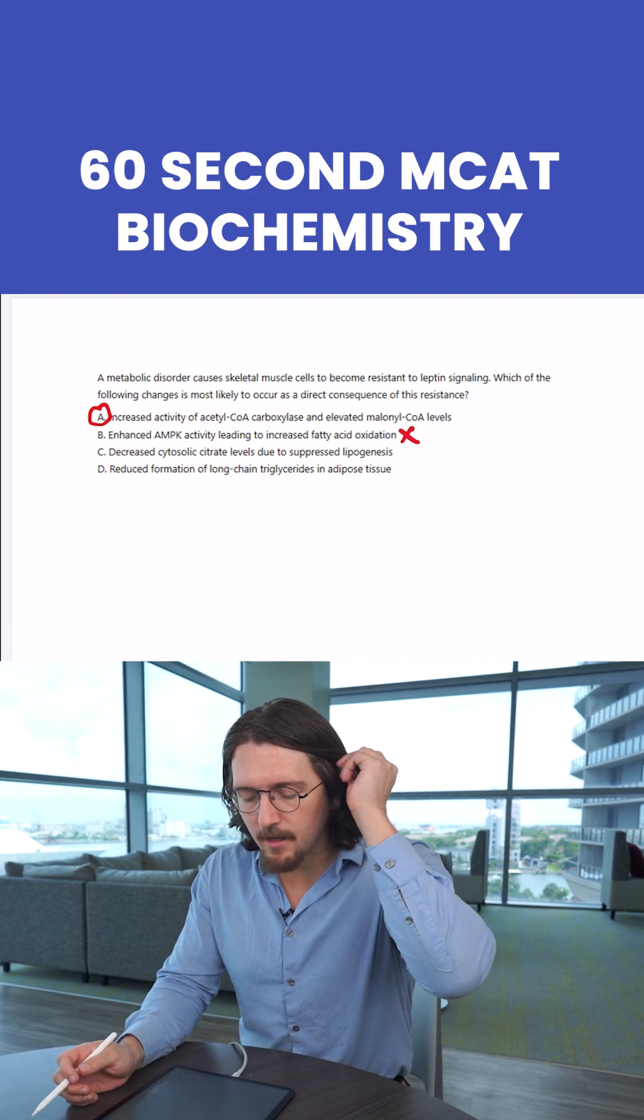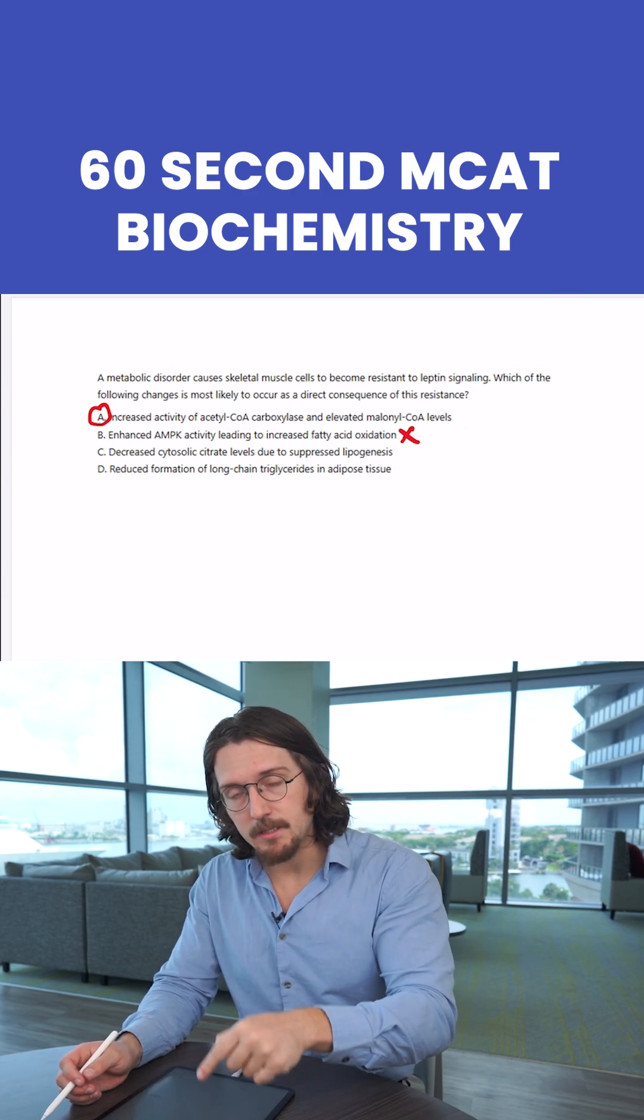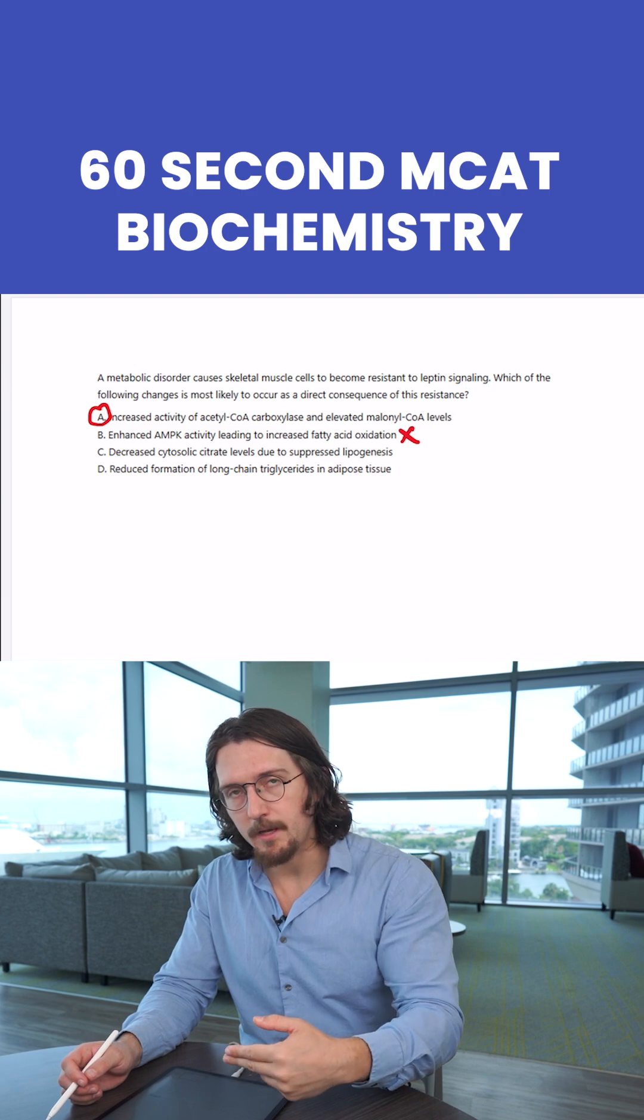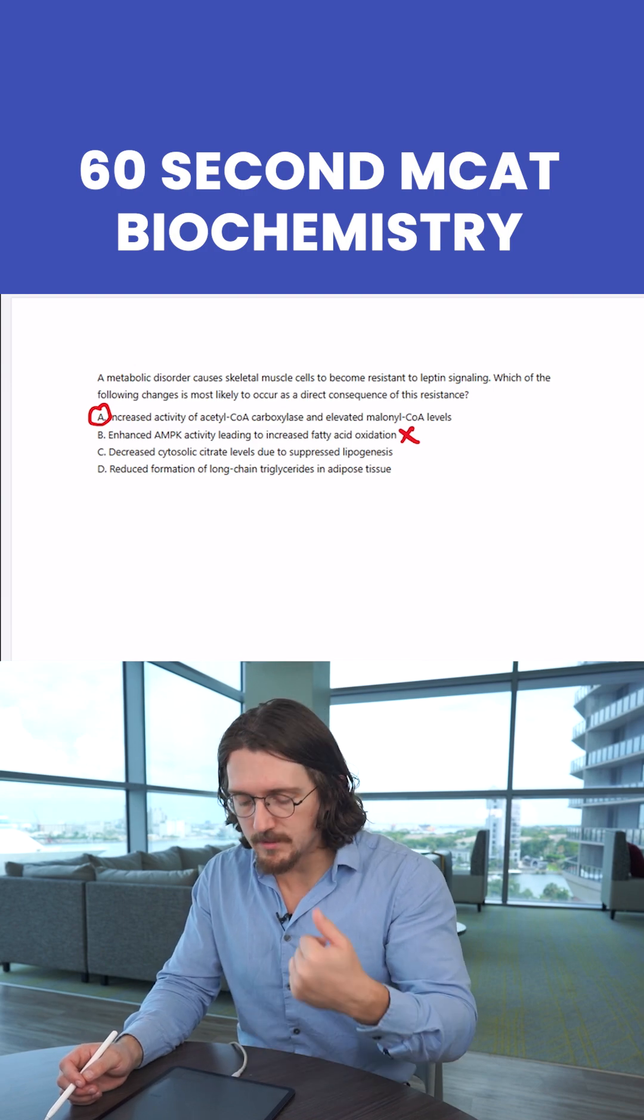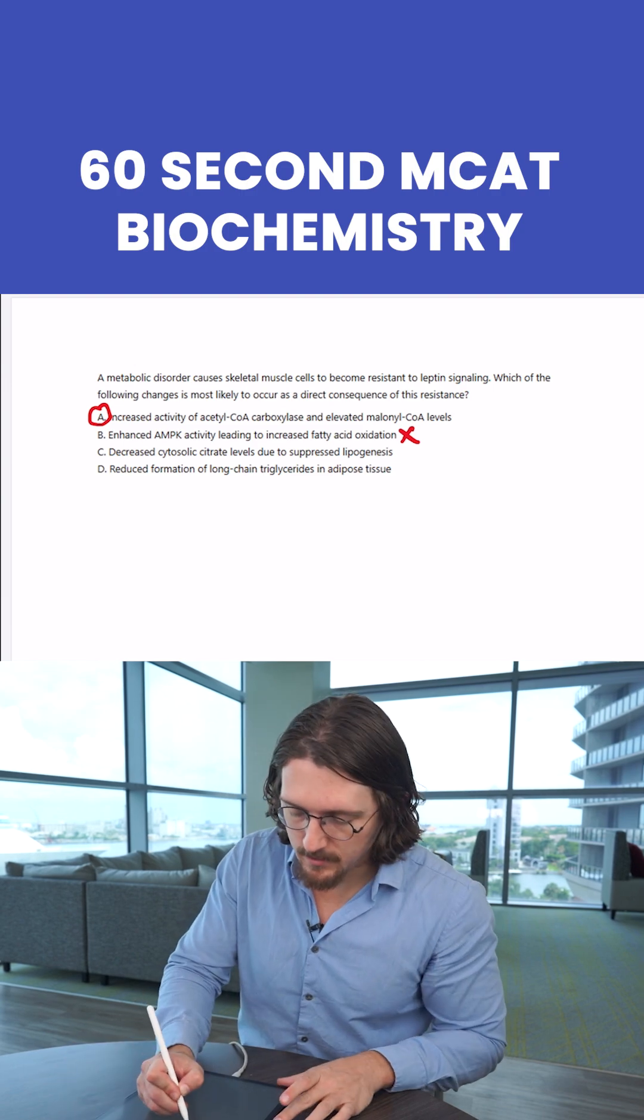C, decreased cytosolic citrate levels due to suppressed lipogenesis. Well, that's lipid synthesis, and that would be something that leptin does normally. But if you're resistant, you should actually have more lipogenesis, not less. So that's wrong.